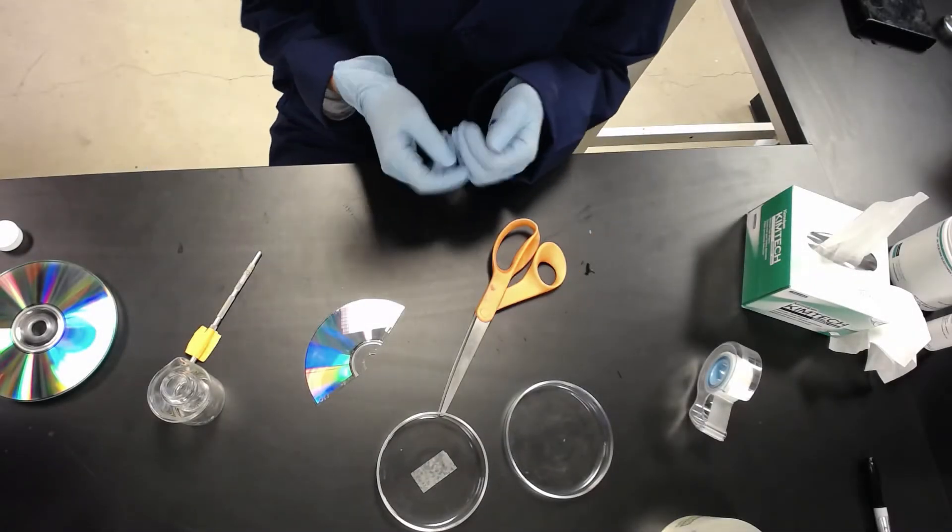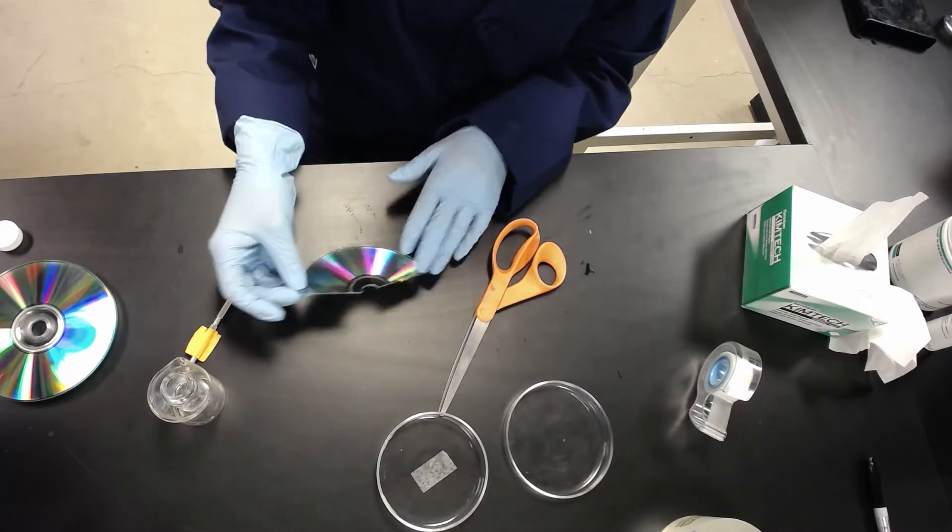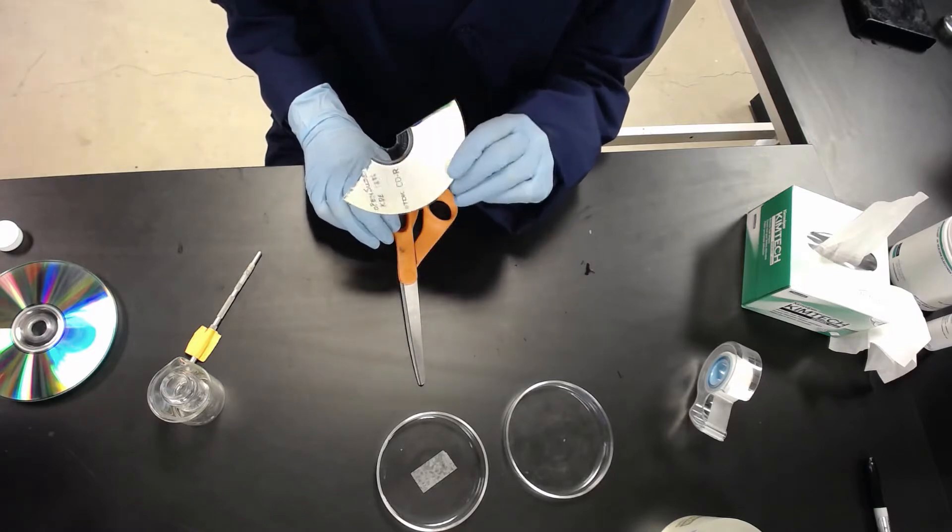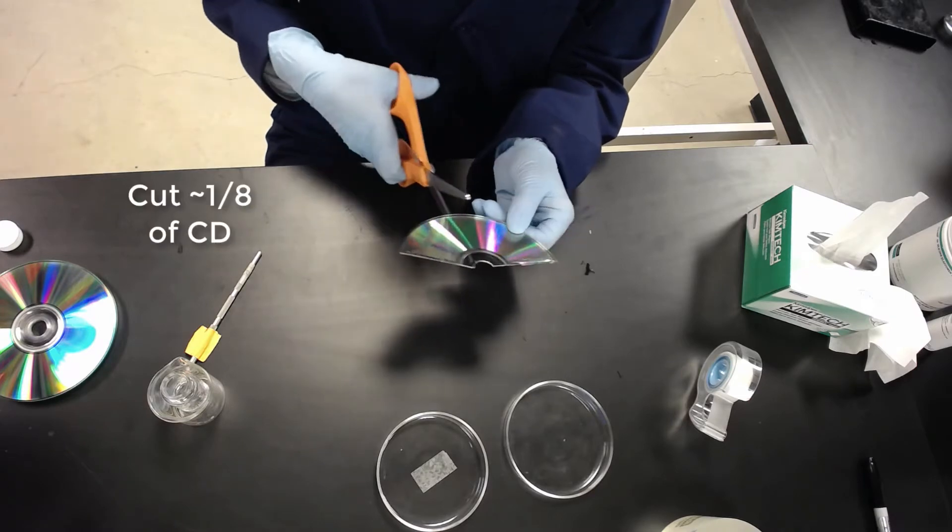Okay, so now we're back at our table and we're going to cut up and prepare our master to make our mold. We've got our CD here, just a regular CD, and we're going to cut about an eighth of the CD.